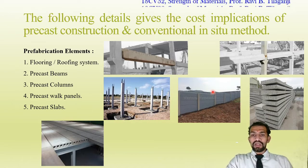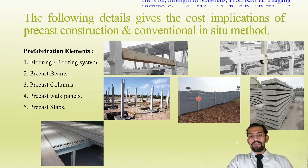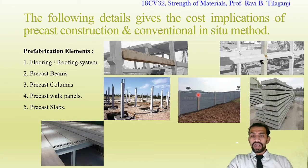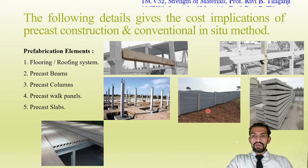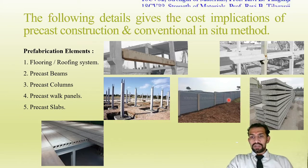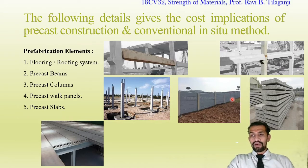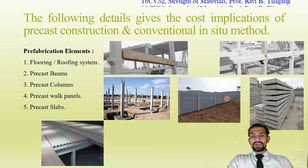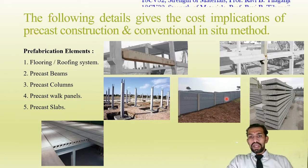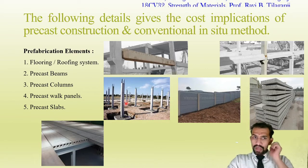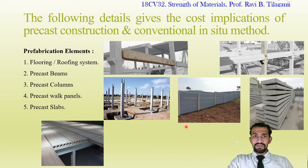Wall panels are easily visible in our surrounding areas, where compound walls are nowadays constructed using vertical and horizontal members. Though the initial cost is a bit higher, maintenance cost is very low. If one panel is damaged, that single panel can be replaced without disturbing the other wall panels. These are the prefabrication elements.